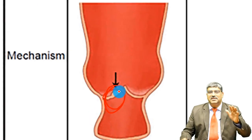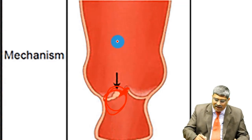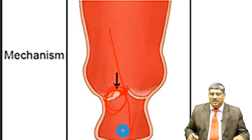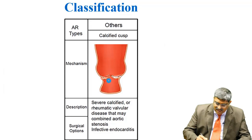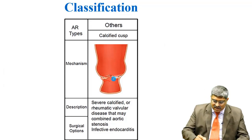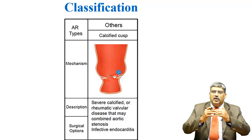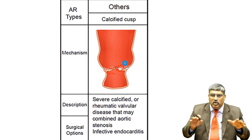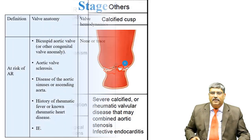Coming to Type 3, the cusp is retracted and shortened, so approximation would not occur, and through this gap the blood passes back into the left ventricle. There is one other type where the valve is severely calcified, or you can have vegetation or similar changes that prevent proper closure of the aortic valve. They do not call it Type 4 but rather the 'other type' of AR.